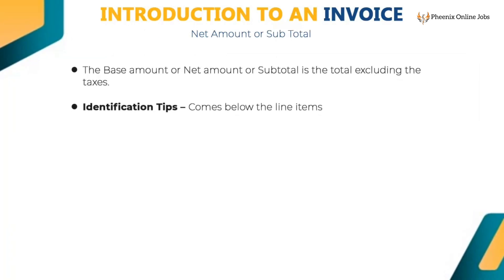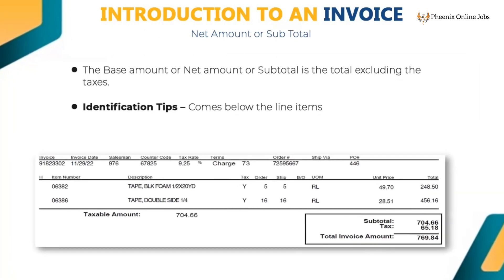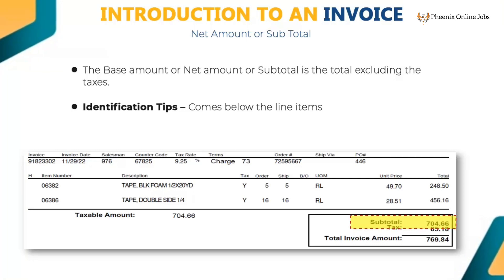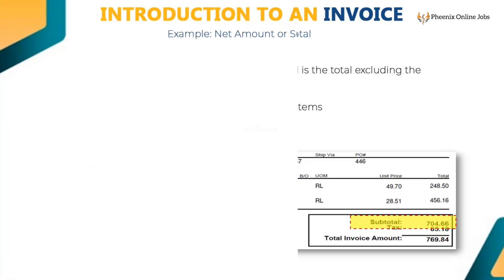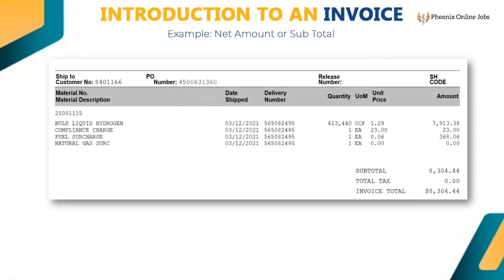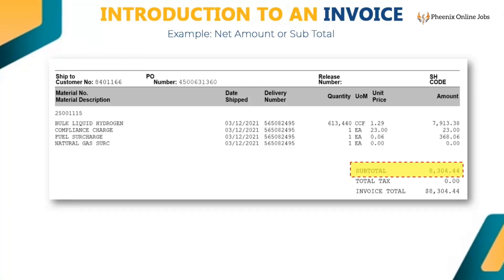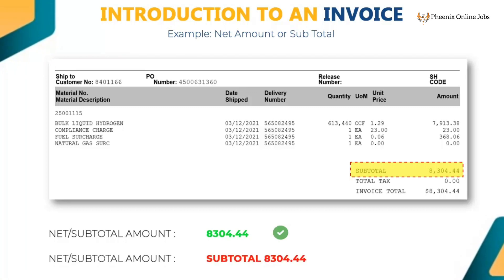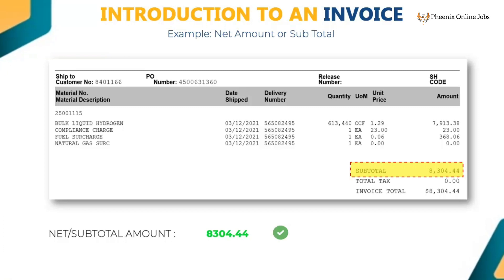The base amount, net amount, or subtotal is the total amount excluding taxes. It comes below the line items. Key only the numeric value — 8304.44 for this example. Do not key the word 'subtotal.' If 'subtotal' or 'net amount' is already populated, then remove those words.